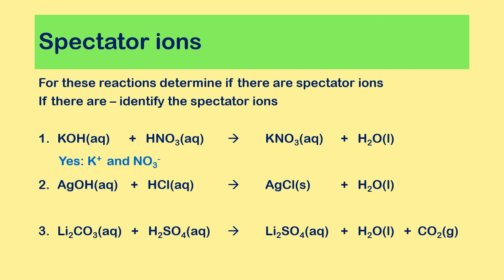For the next reaction, silver nitrate(aq) + hydrochloric acid(aq) → silver chloride(s) + H₂O(l). We have produced a solid on the right-hand side — that is a precipitation reaction, and if it is a precipitation reaction, there are no spectator ions.